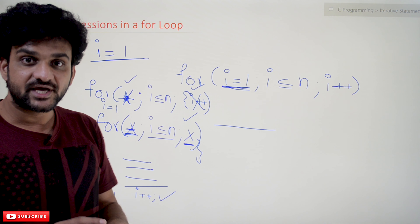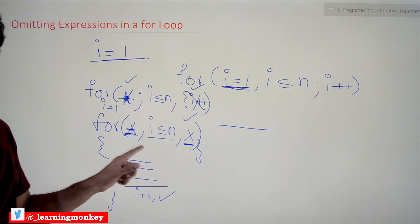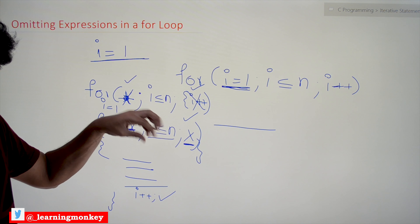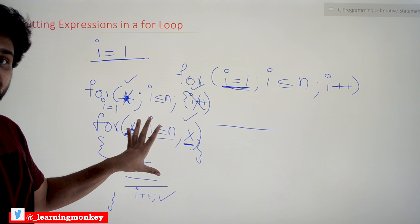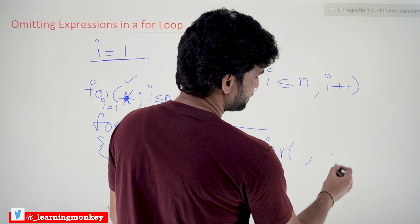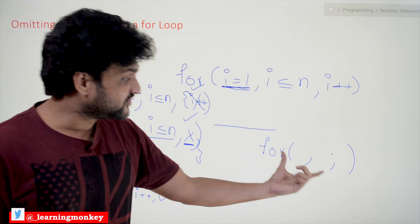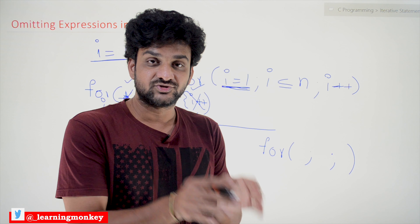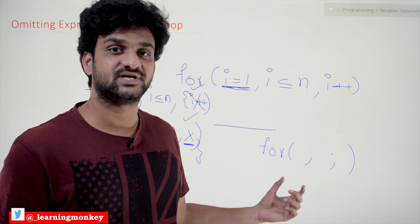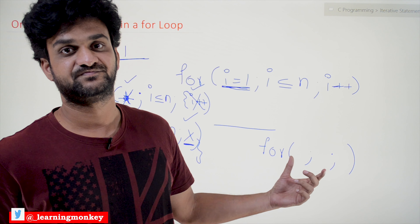Now the point is: can we omit all expressions? Yes, this can also be done — for(;;). It does not serve the typical purpose of the for loop, but omitting all expressions is also used in programming. This for loop is what we call an infinite loop. Wherever the context comes in programming, we will discuss about this infinite loop further. Right now, just try to remember that this construct for(;;) is also legal.